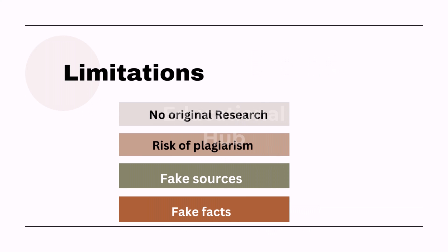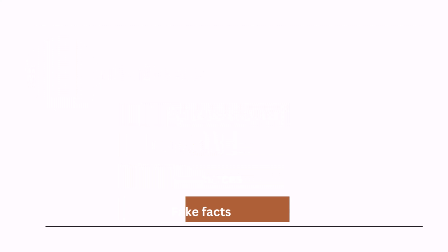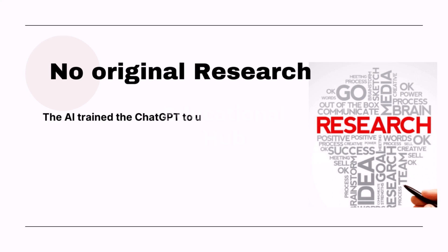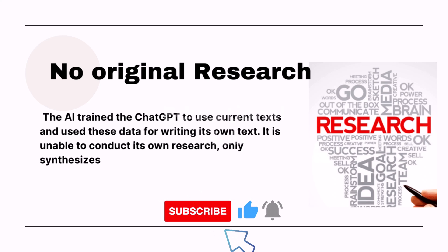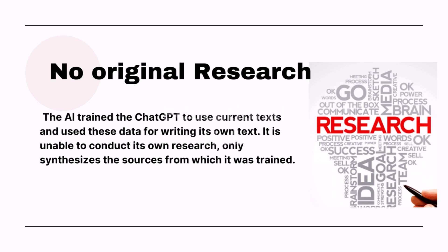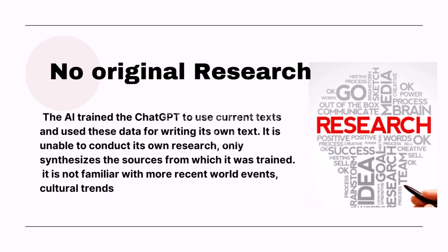Sixth: limitations of ChatGPT. Even though ChatGPT is a powerful writing tool, keep the following limitations in mind. First, no original research: ChatGPT was trained on existing texts and can only synthesize sources from that training data — it cannot conduct its own research. It is also not familiar with events after 2021, including recent world events, cultural trends, and developments in research areas, and may therefore provide outdated information.